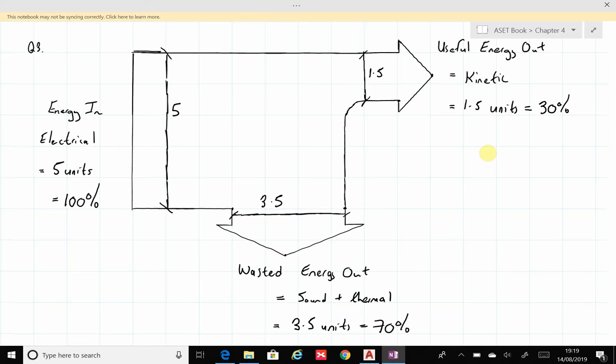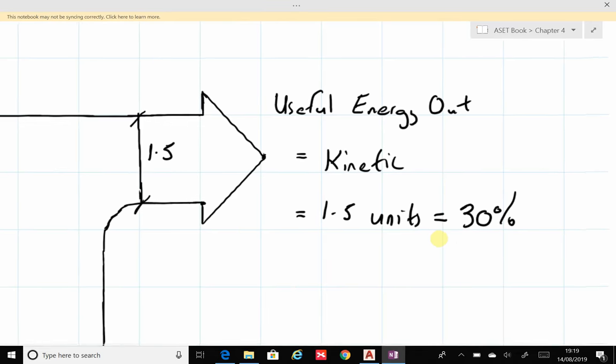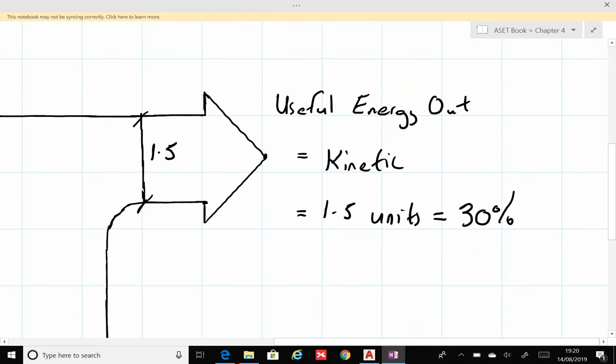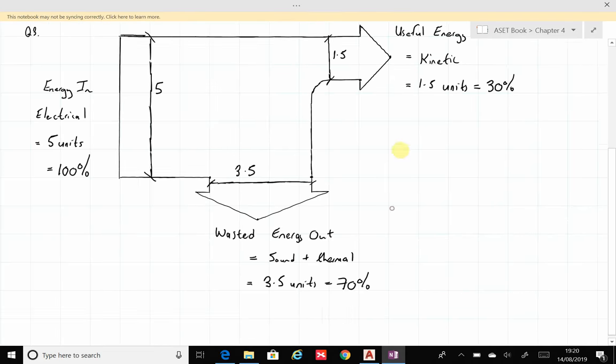The useful energy going through the system is kinetic energy and has taken up 1.5 units, and the 1.5 units overall corresponds to 30 percent.